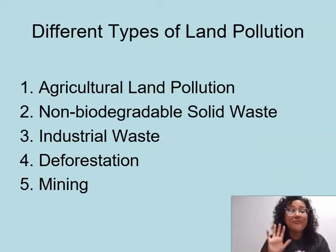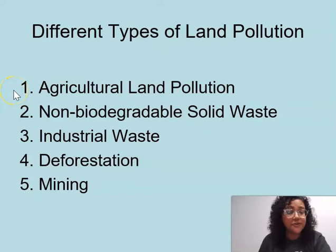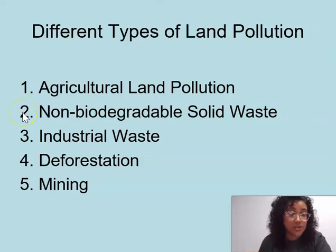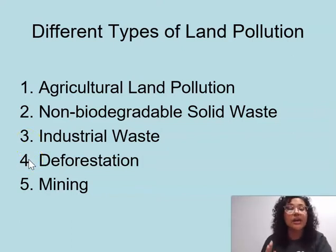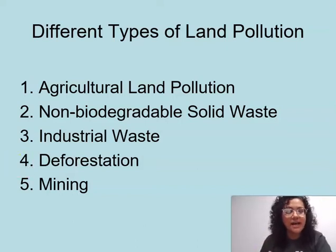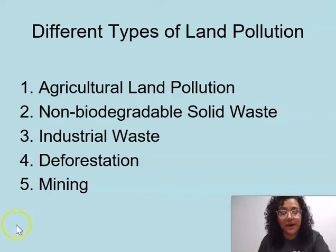There are five different types of land pollution. Number one, agricultural land pollution. Number two, non-biodegradable solid waste. Number three, industrial waste. Number four, deforestation. And number five, mining. In the next couple of slides, I'm going to be going over each one and also showing you a picture so that you can get an idea of what we're talking about.